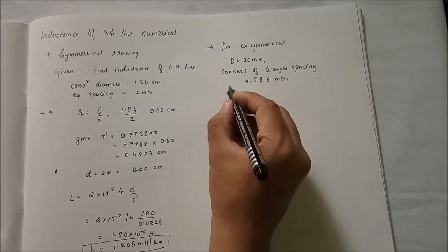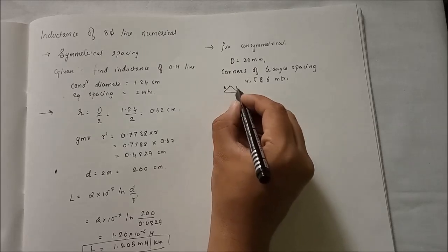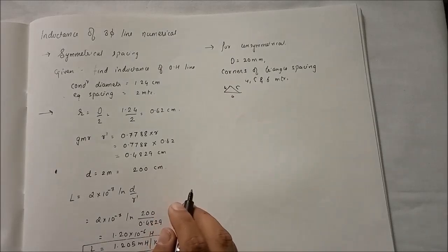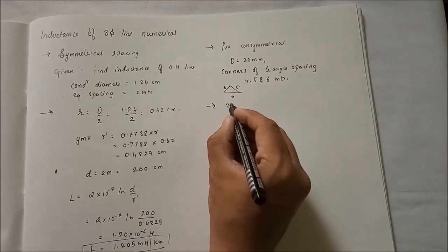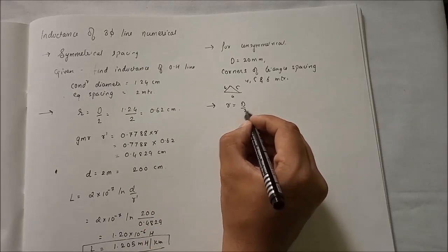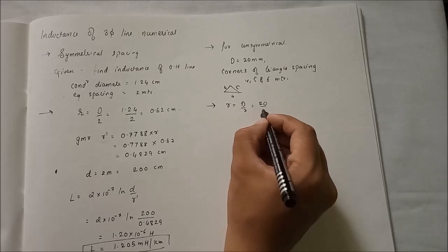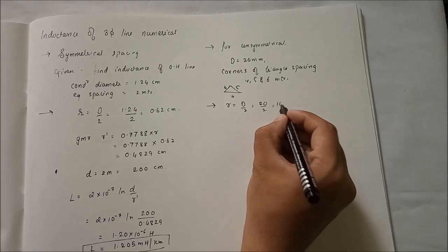Means this is 4, 5, and 6 meter. So first we will find the radius, which R is equal to 20 by 2. So this will be 10 mm.